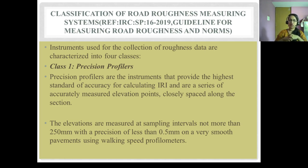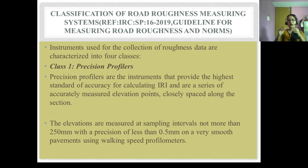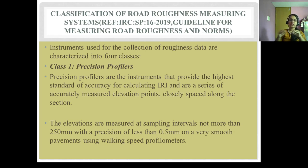Class 1 is precision profilers — instruments that provide the highest standard of accuracy for calculating the IRI from a series of accurately measured, closely spaced elevation points along the section. Elevations are measured at sampling intervals of not more than 250 mm with a precision of less than 0.5 mm on very smooth pavements, using walking speed profilometers.